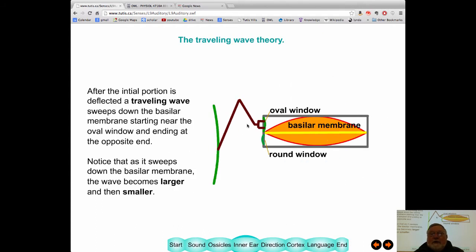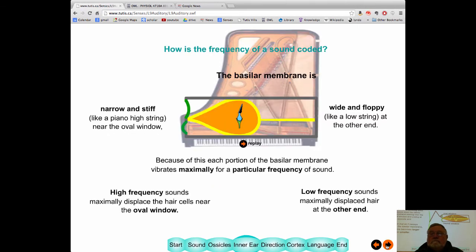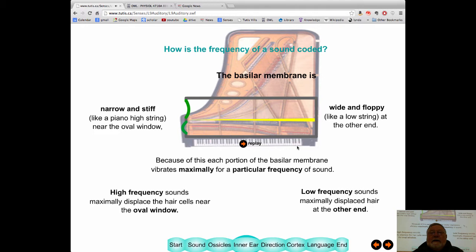So what happens? When this presses, this oval window, it initiates this little wave. And what's neat is that little wave travels down the basilar membrane. More importantly, the wave, as it travels down, gets bigger and then smaller again. And so it changes size.